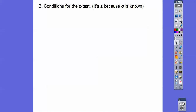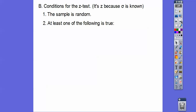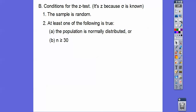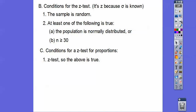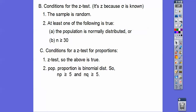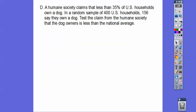So your conditions for a Z-test — and the Z-test is because our population standard deviation is known — are: the sample has to be random, and at least one of the following is true: either it states the population is normally distributed, or your sample size is greater than or equal to 30. For a Z-test for proportions, the population proportions follow a binomial distribution, so NP must be greater than or equal to 5, and NQ must be greater than or equal to 5.